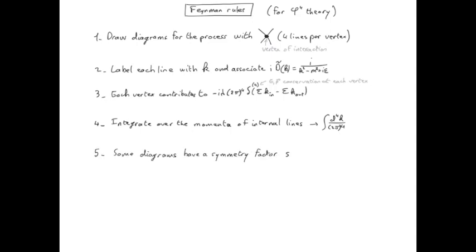The fifth rule is that some diagrams have a symmetry factor s, and that happens when we have different ways to connect internal lines together to the vertices.